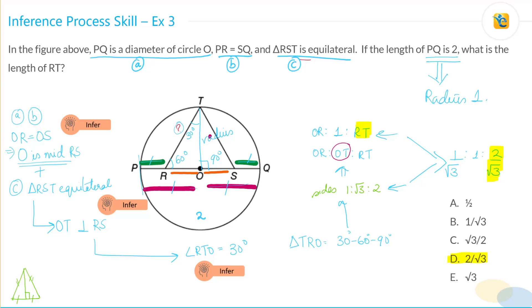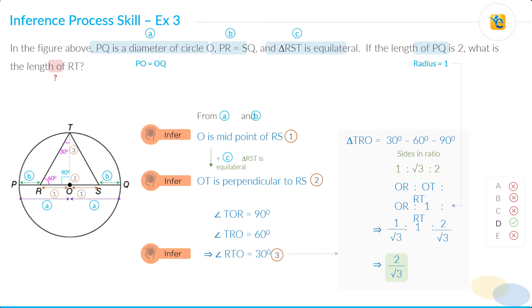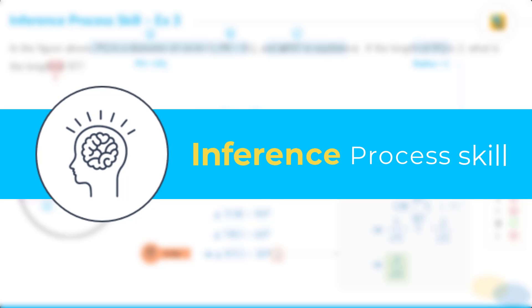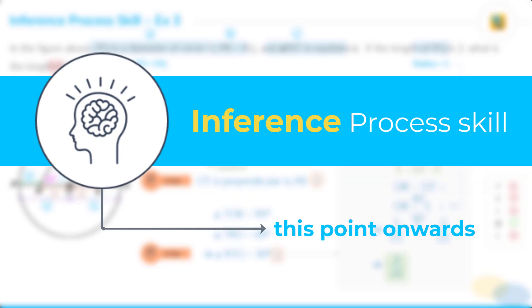So, I want you to take a look at this once again and see how we have drawn inference one at a time and we in all drew three inferences utilizing various bits of information provided in the question statement and our conceptual understanding. And ultimately, we were able to arrive at the answer for this question. So, start applying the inference process skill from this point onwards.